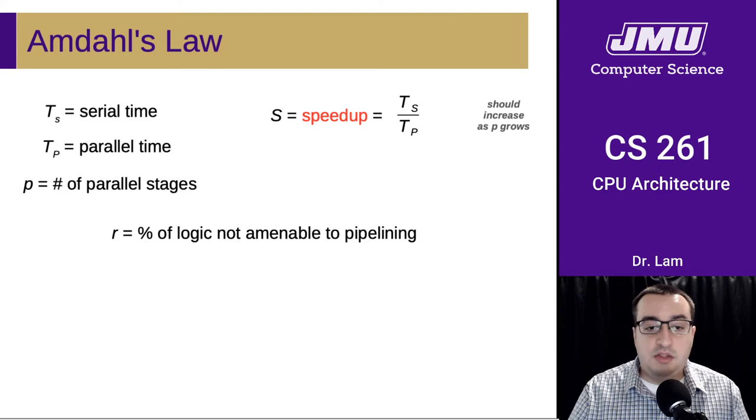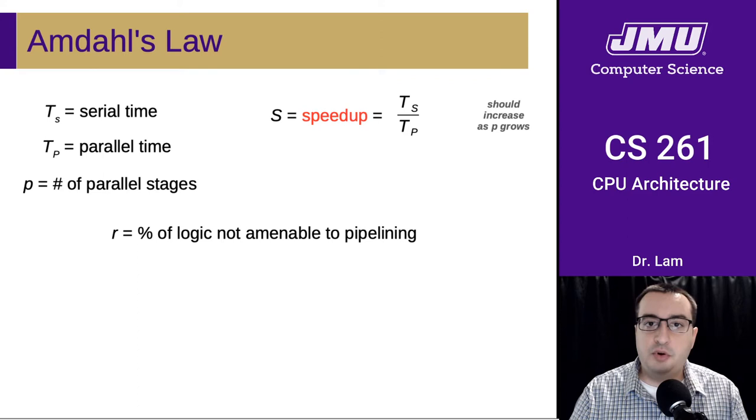Let's define R as being the percentage of logic that is not amenable to pipelining. So this is the portion of execution that will not decrease as we add more parallel stages.